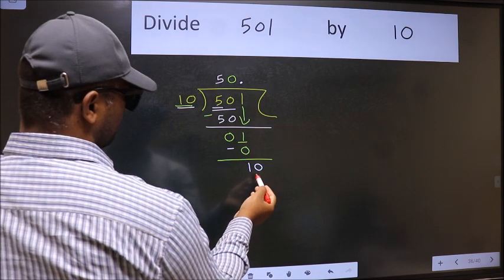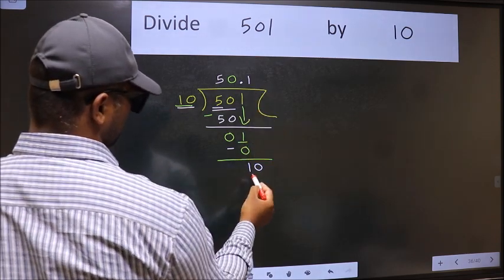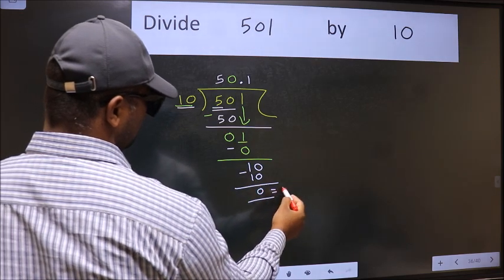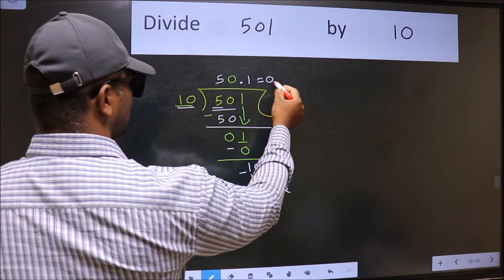So 10. When do we get 10 in the 10 table? 10 once, 10. Now we should subtract. We get 0. This is our remainder. And this is our quotient.